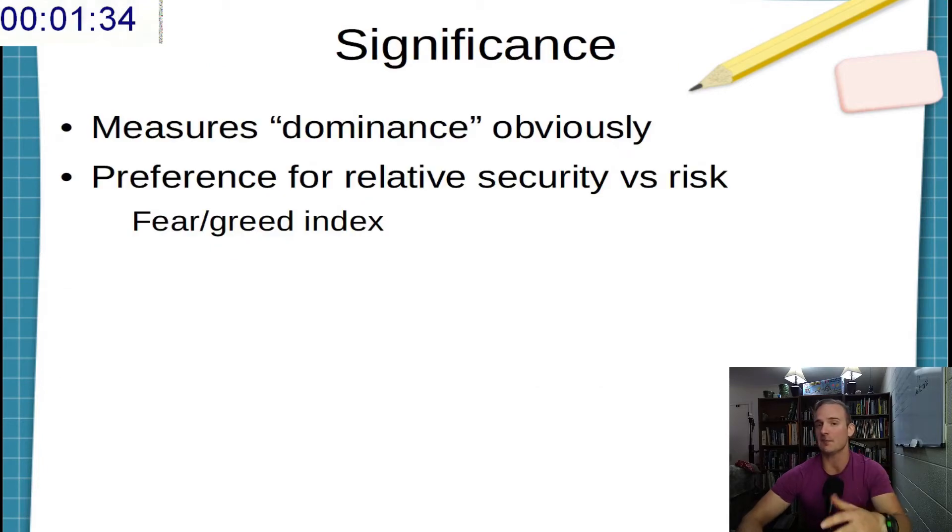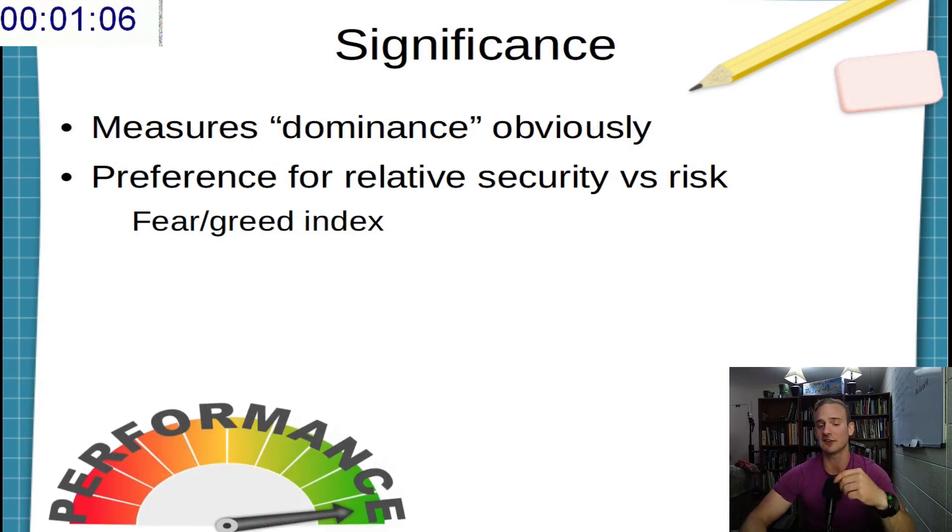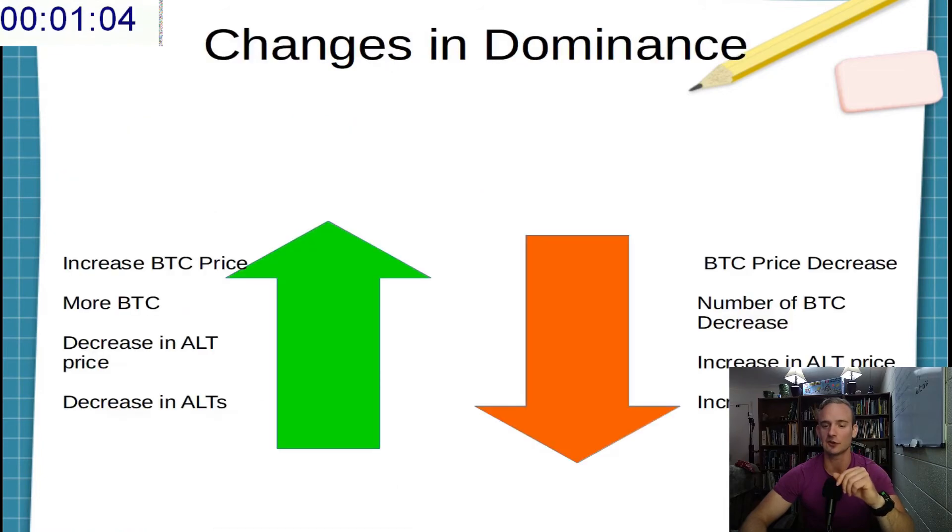But what does it actually mean? Now, obviously we said it measures the relative market cap of Bitcoin compared to other cryptos, but it has a little bit deeper meaning as well. Cryptocurrencies are generally considered to be volatile assets. However, among these volatile assets, Bitcoin is sometimes seen as relatively more stable and relatively more predictable. So as Bitcoin dominance increases, that means more people are preferring Bitcoin to some of these other altcoins. So it can be kind of thought of as a fear and greed index of sorts.